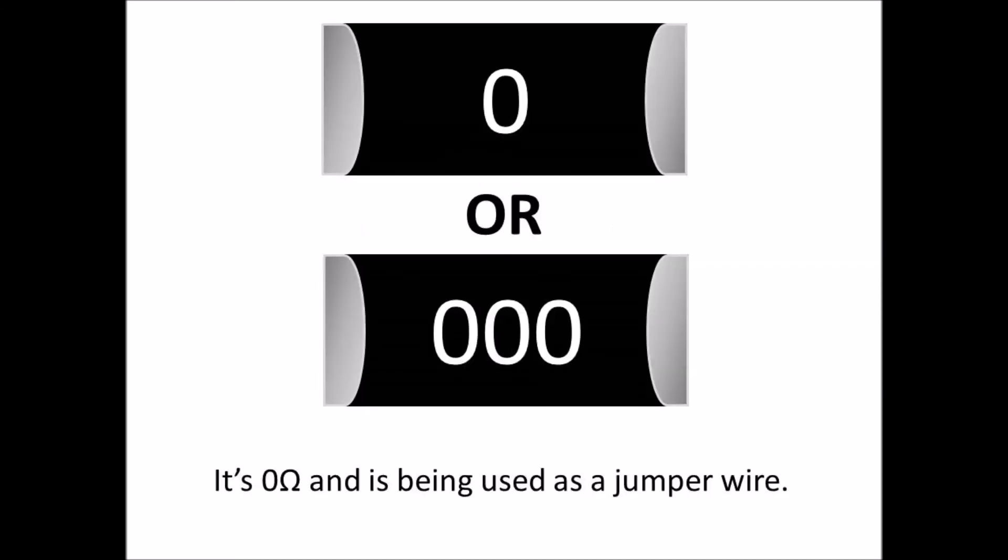So here's one you might see that just has a zero or three zeros, and the value of that is just zero ohms. It's basically just a jumper wire being used to get it from one solder point to another. So it's just a jumper, and it's zero ohms.